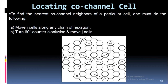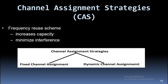Locating co-channel cells: To find the nearest co-channel neighbors of a particular cell, one must do the following: (a) move i cells along any chain of hexagons, then (b) turn 60° counter-clockwise and move j cells.